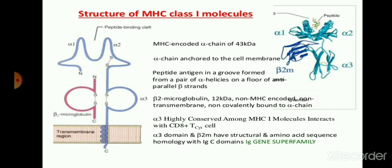The peptide antigen groove is formed by pairs of alpha helices on the floor of the anti-parallel beta strand. The beta strand is anti-parallel towards the alpha chain, and at the pair of alpha helices it forms the peptide antigen groove in which the peptides of antigen bind to the MHC molecules. Beta-2 microglobulin is about 12 kilodaltons — a non-MHC-encoded, non-transmembrane molecule non-covalently bound to the alpha chain — but it is present in the MHC class 1 molecule.